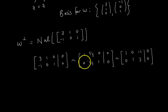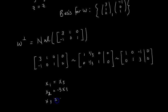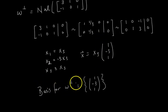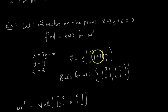To find a basis for W perp, we find a basis for the null space of that matrix. We row reduce to reduced row echelon form. The first row gives x₁ equals x₃, the second row gives x₂ equals negative 3x₃, and x₃ is a free variable. So the basis for the null space — and therefore W perp — is the single vector (1, -3, 1).